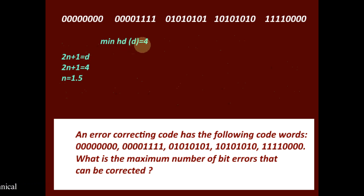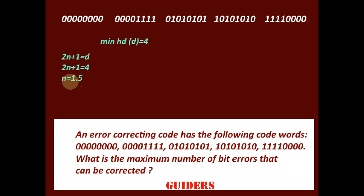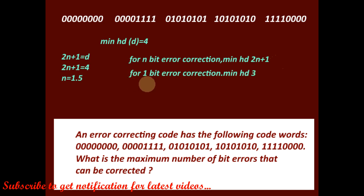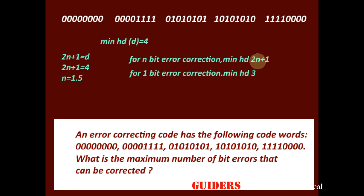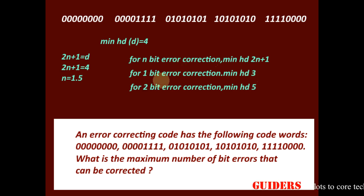With a minimum Hamming distance of 4, what is the maximum number of errors that can be corrected? Using the relation 2n + 1 = d, with d = 4, we get 2n + 1 = 4, meaning n = 1.5. Since we cannot correct 1.5 bit errors, we can correct only up to 1 bit error, so n = 1. For 1-bit error correction the minimum Hamming distance must be 3, and for 2-bit error correction it must be 5. Since the Hamming distance here is only 4, we can correct only 1 bit error.